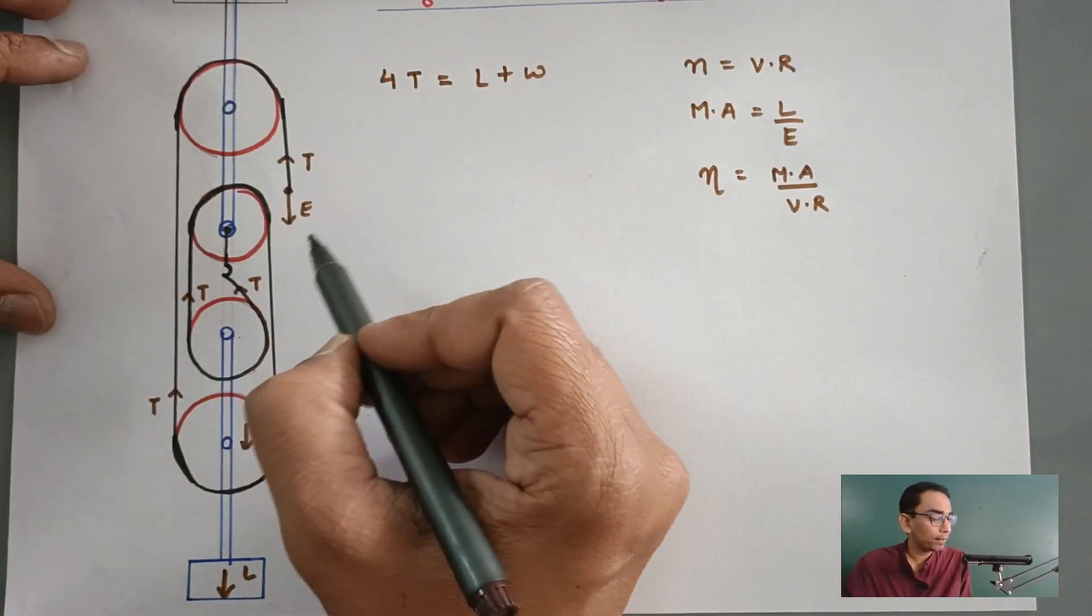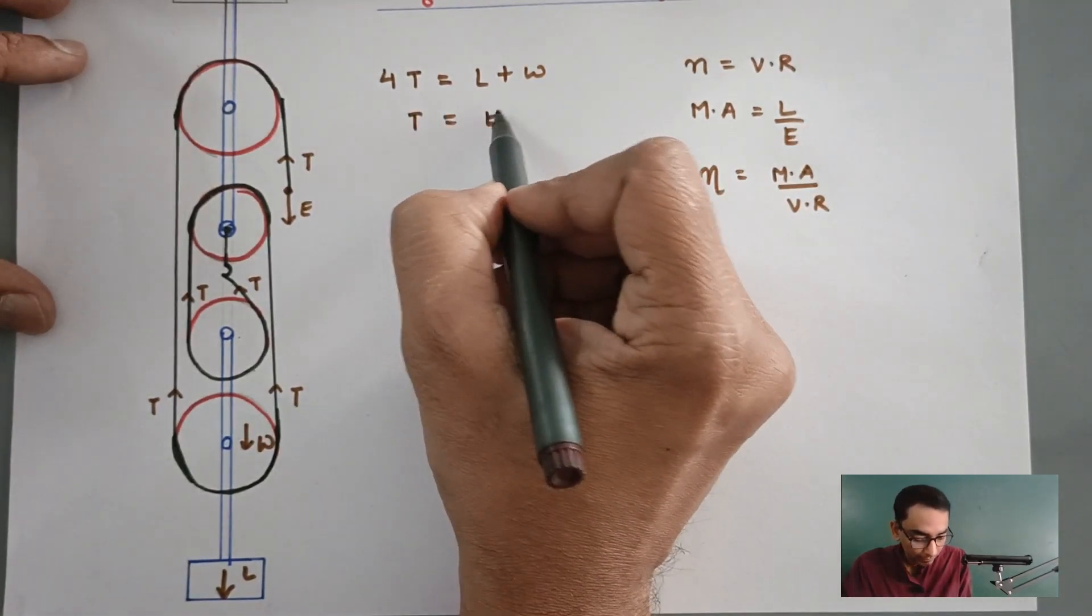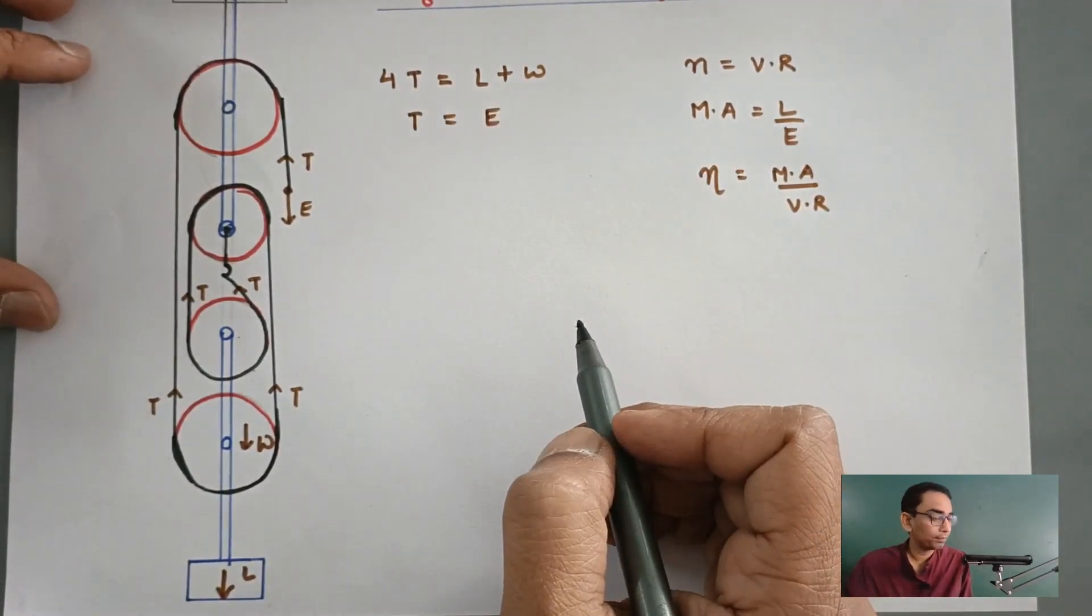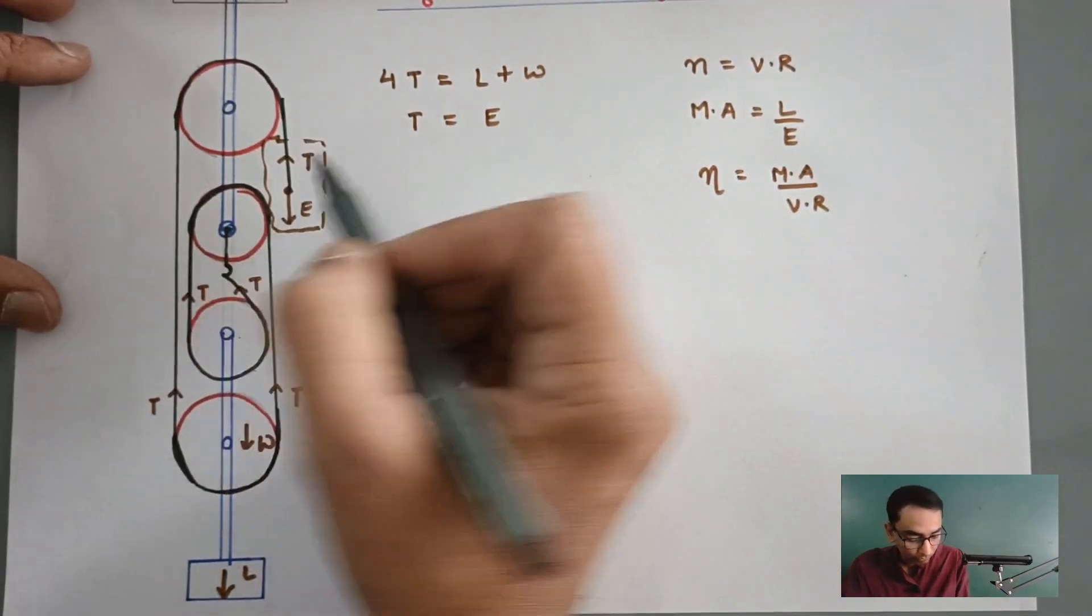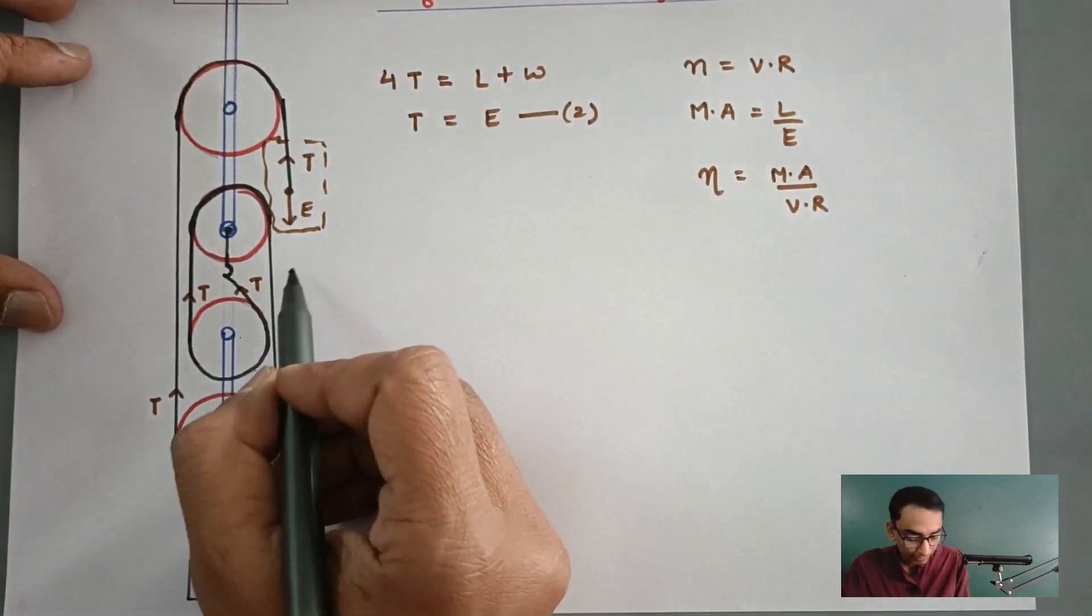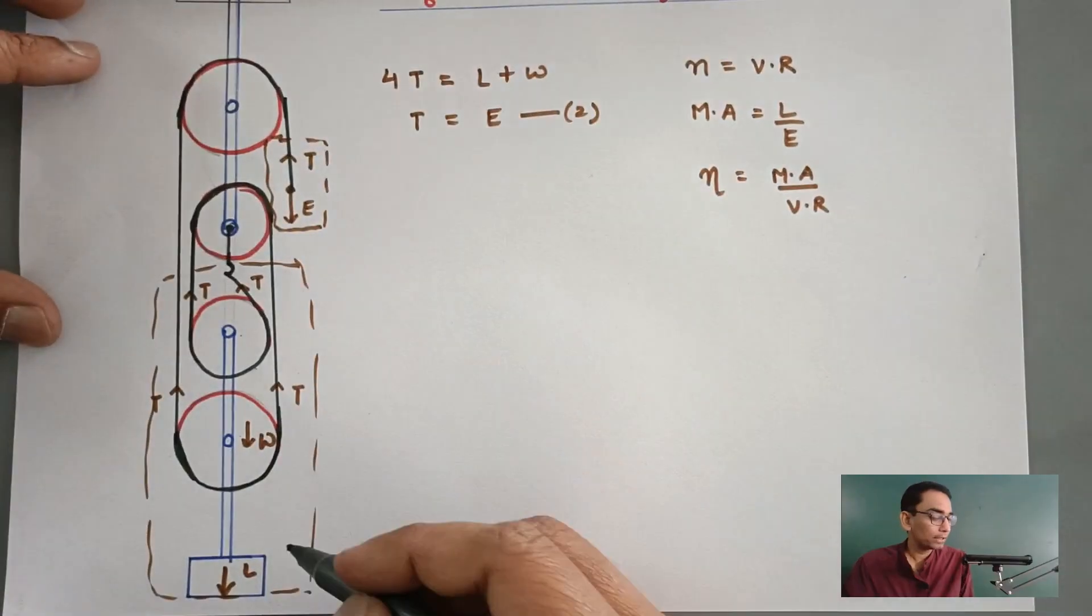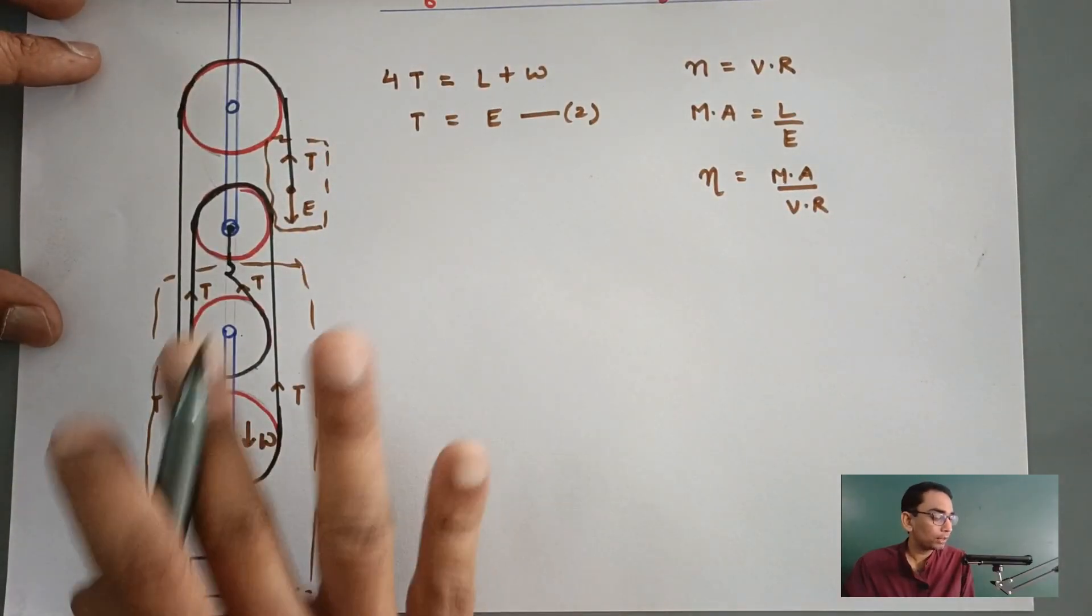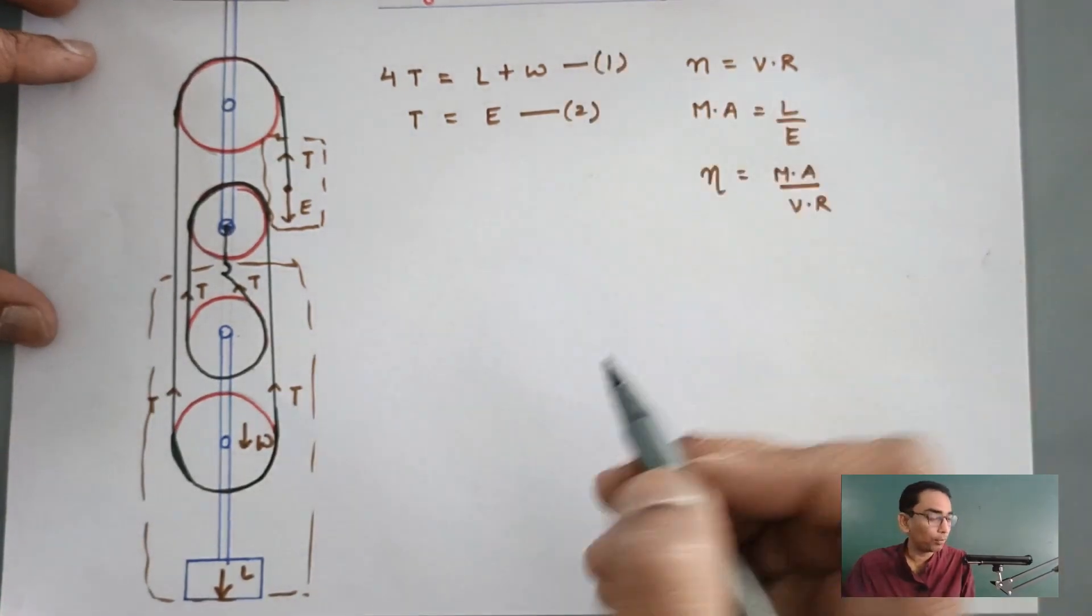Now, if you look carefully in equilibrium condition, here single tension is being balanced by the effort. In this part, the total upward as well as the total downward forces are mentioned here, let us say equation number 2. And in this part, let me call this as part 2, this part total upward forces and total downward forces are mentioned by equation number 1.